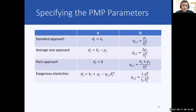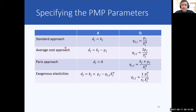The next approach is the average cost approach. In comparison to the standard approach, the parameters of the quadratic cost term are larger here, which implies a reduced price elasticity.